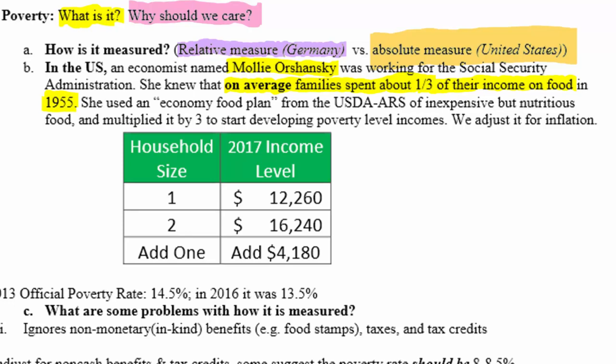She set out to figure out how much a family spends on food. If they spend a third of their income on food, we can figure out what total income a lower income household might need to satisfy all of their other bills. So she contacted the United States Department of Agriculture, which had something called an economy food plan.